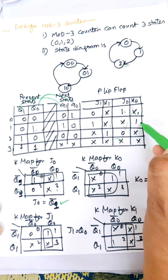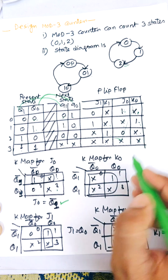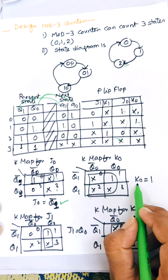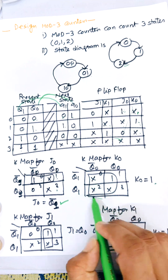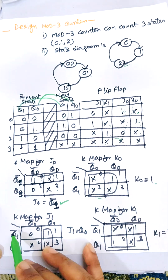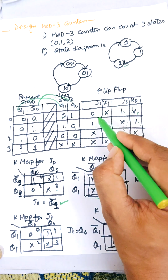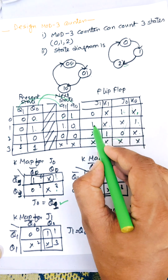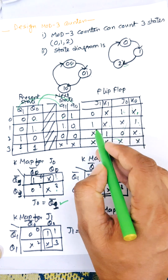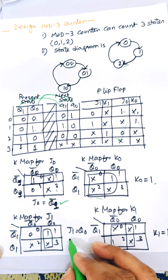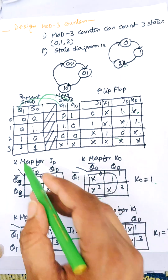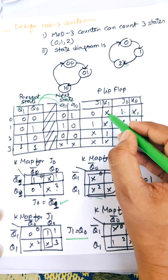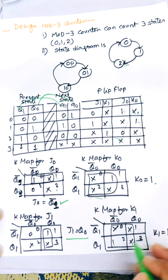The K-map for K0 has entries: cross, cross, 1, cross, 1, cross, 1, cross. The equivalent expression is K0 equals 1. Now for the K-map for J1: entries 0 is 1, 1 is 1, 2 is cross, 3 is cross. Considering this 1, J1 equals Q0. For the K-map for K1: cross, cross, 1, cross. Considering this 1, K1 equals 1.